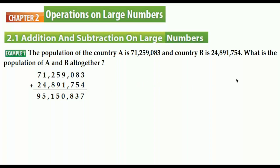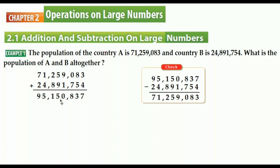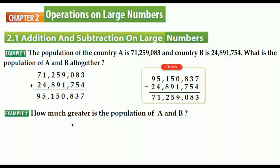Now we are going to check whether our operation is correct. These two numbers we added are called addends, and the result is called the sum. To check, we write the sum first — 95 million 150 thousand 837 — then subtract one of the addends, which is 24 million 891 thousand 754, starting from the ones digit. We get 71 million 259 thousand 83, which matches, so the answer is correct.